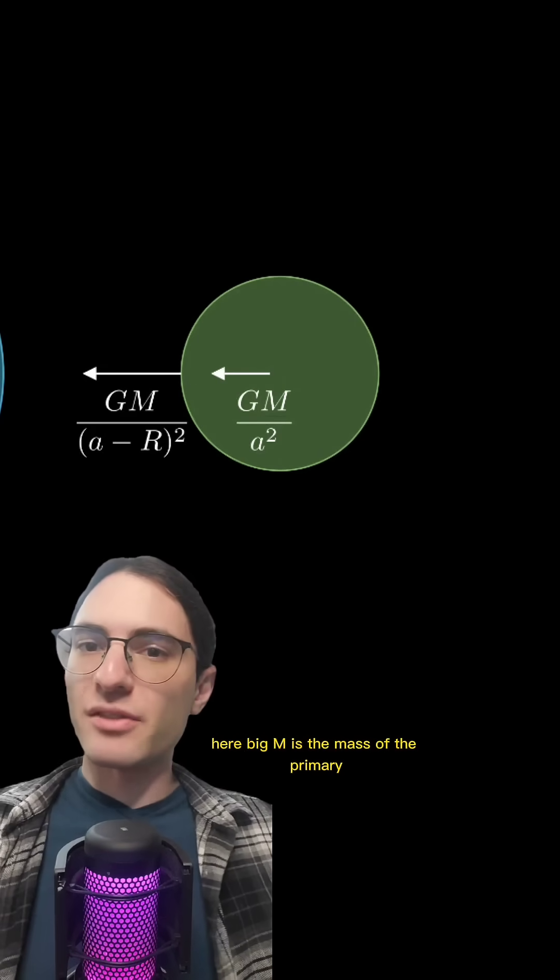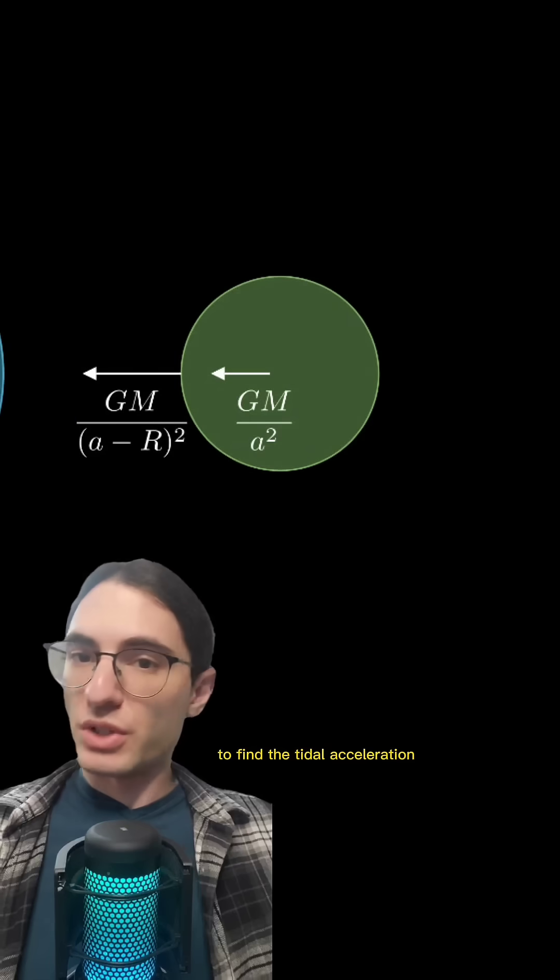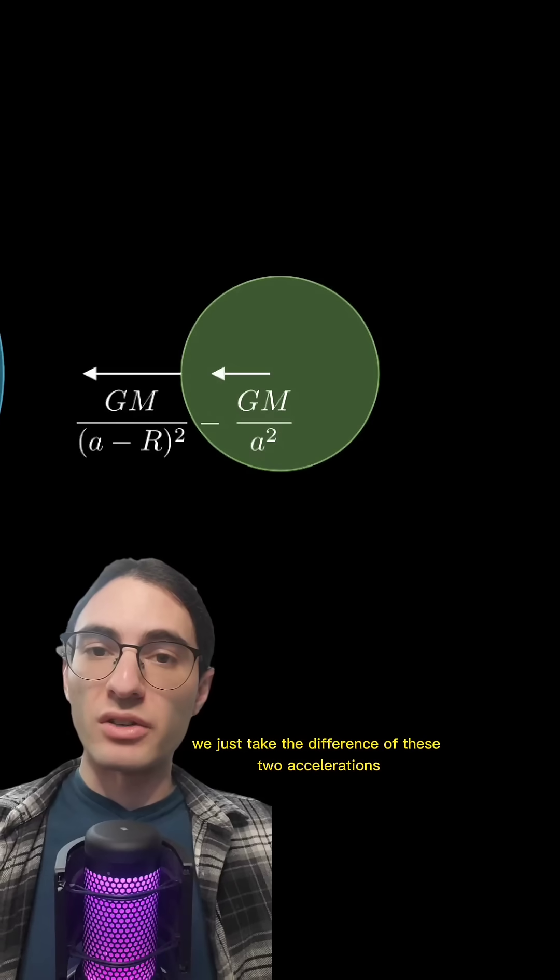Here, big M is the mass of the primary, and a is the distance between the primary and the secondary. To find the tidal acceleration, which is the acceleration the dust will feel relative to the surface of the moon, we just take the difference of these two accelerations. Importantly, the acceleration at the surface is ever so slightly higher because it's ever so slightly closer to the primary.